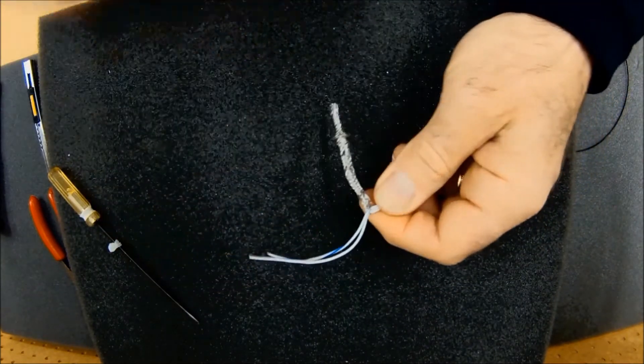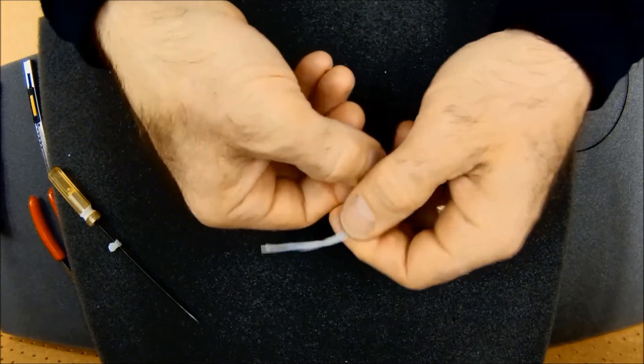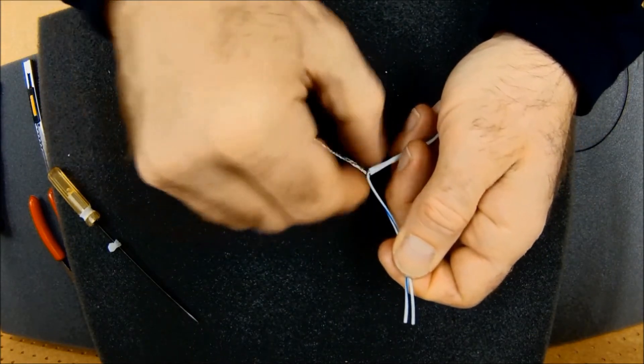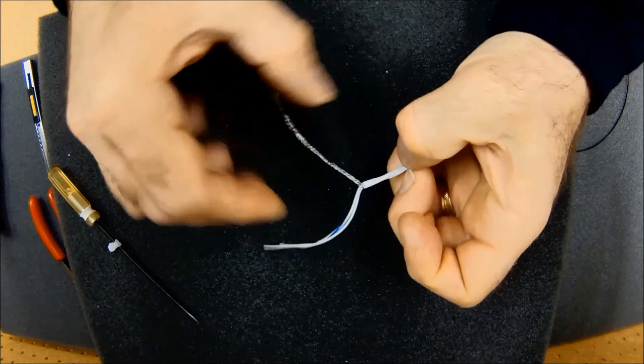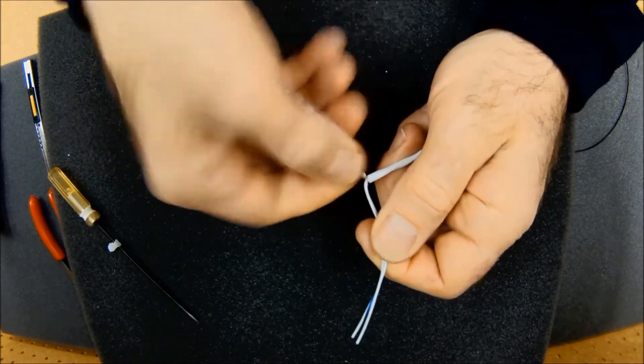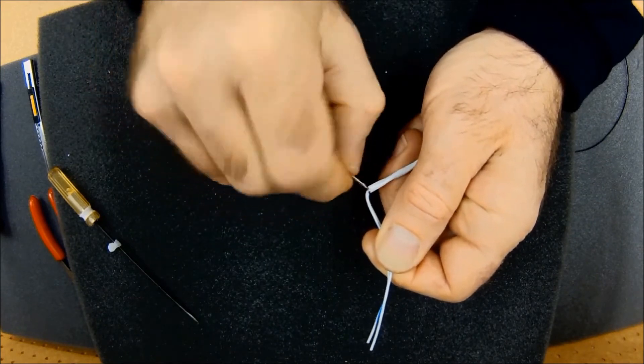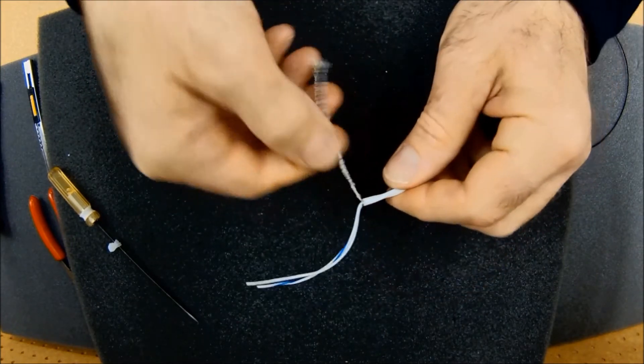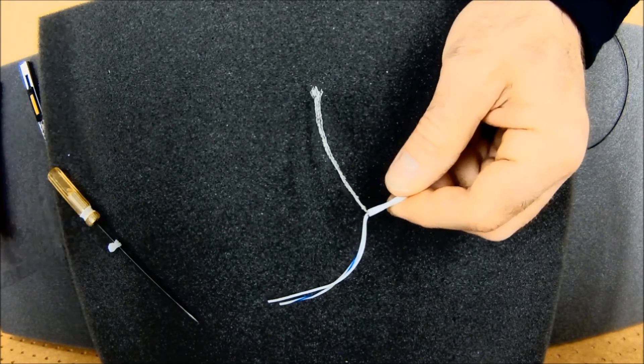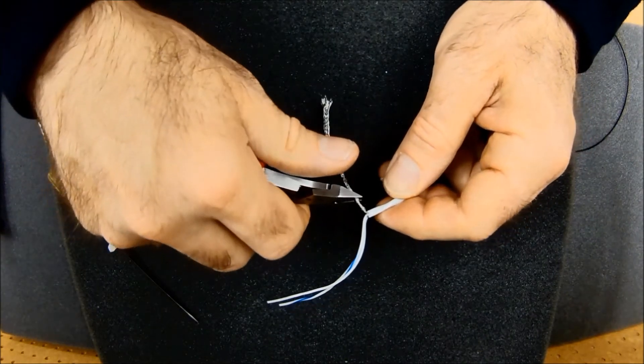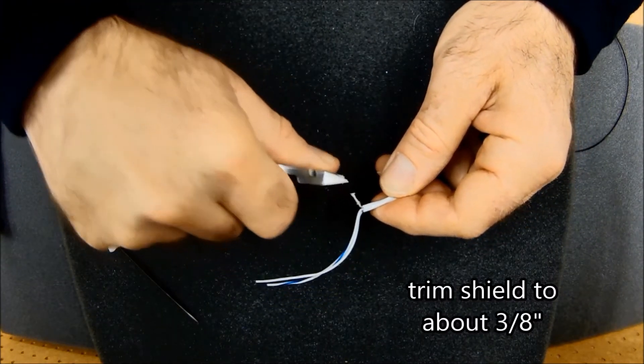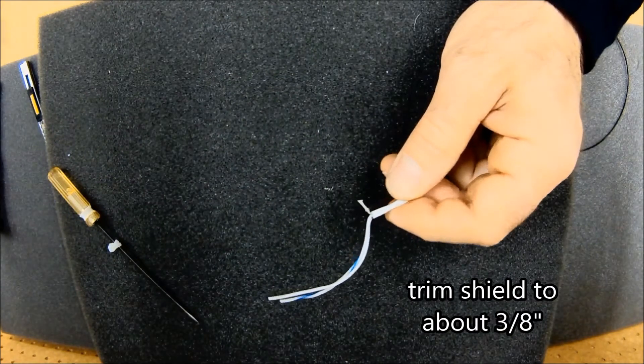This little piece of paper, I'm just going to tear it off. Now I can take both the shield strands and twist them together just so they don't come apart. I'm going to trim them off. Length here isn't too critical, but I'm going to say about three-eighths of an inch.